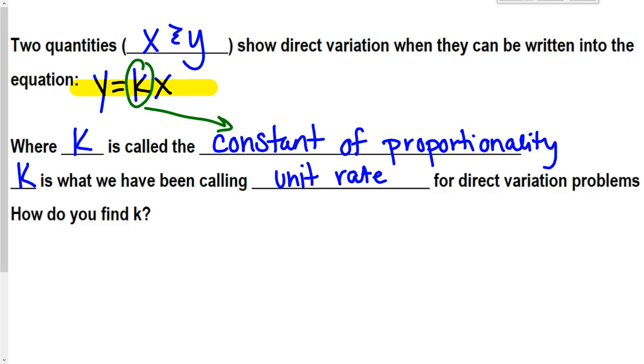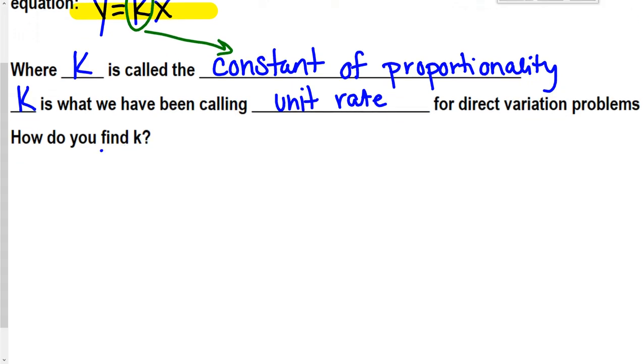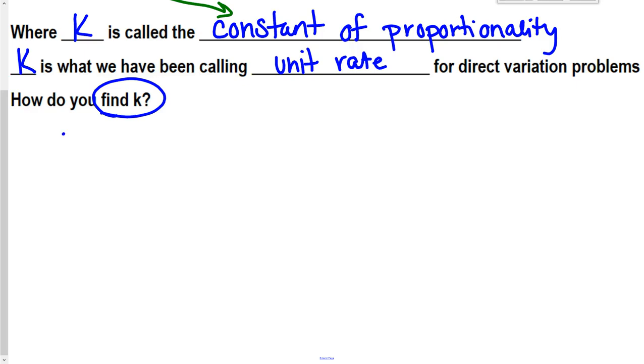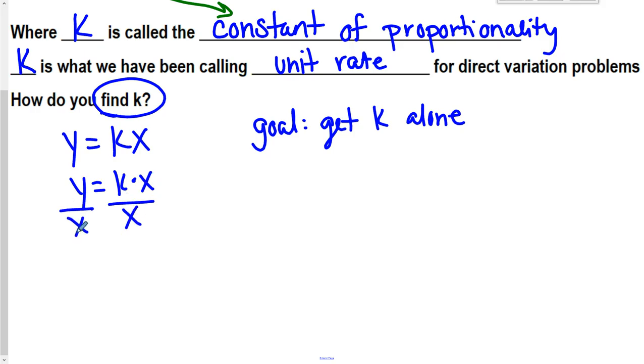So how do you find k? One of the things you're going to have to do is to find k. And if we're going to be using this equation, y equals kx a lot. If I want to know what the value of k is, the goal here is to get k alone. Just like if I was asking you to get x by itself. This is same as y is equal to k times x. So if I want to get k by itself, I divide each side by x. Just like if it was a number, x goes away.